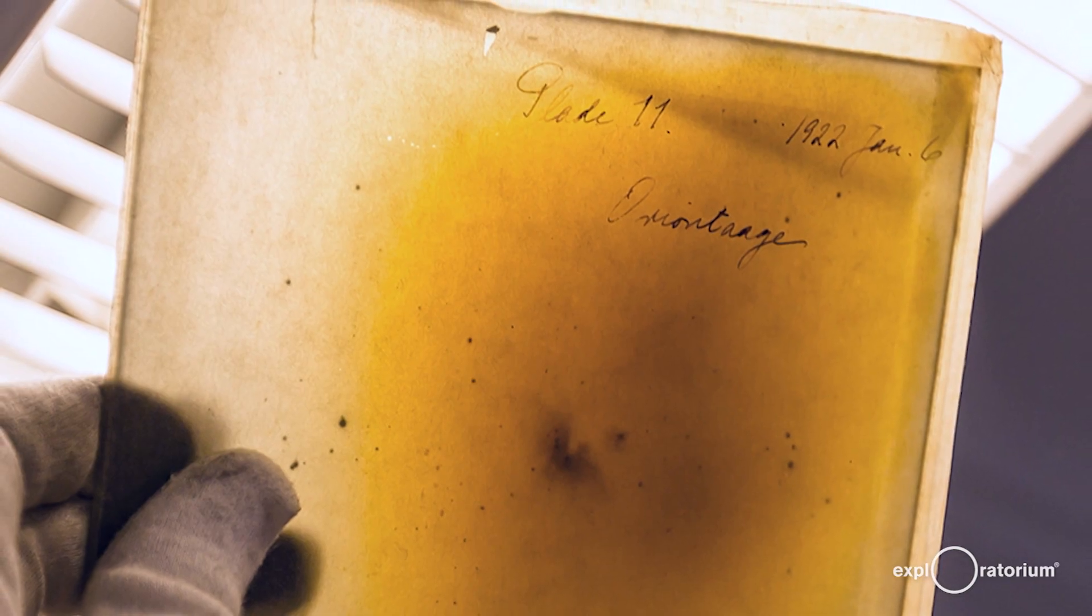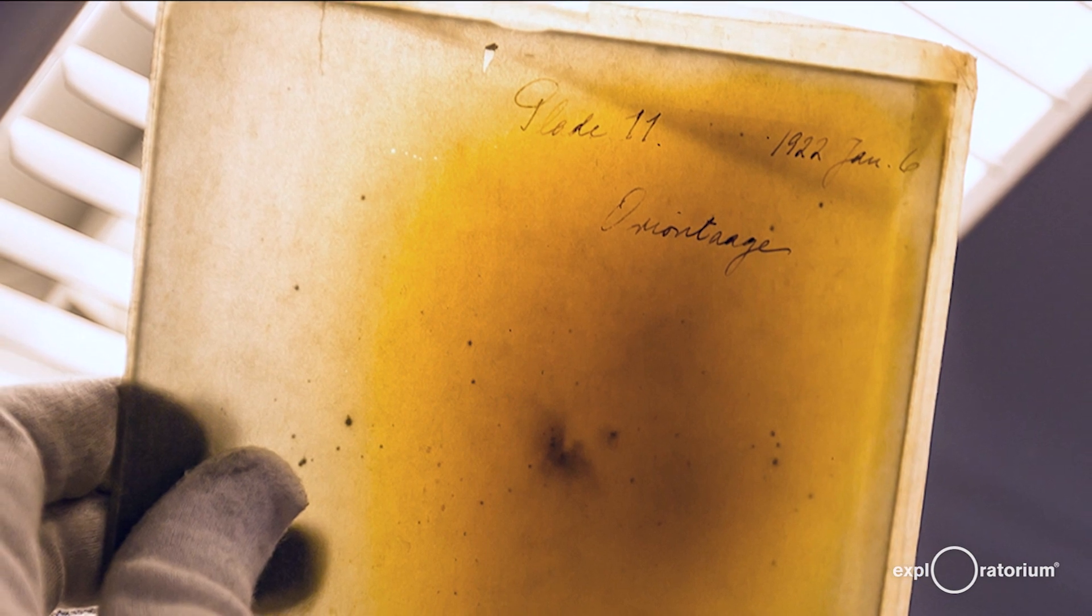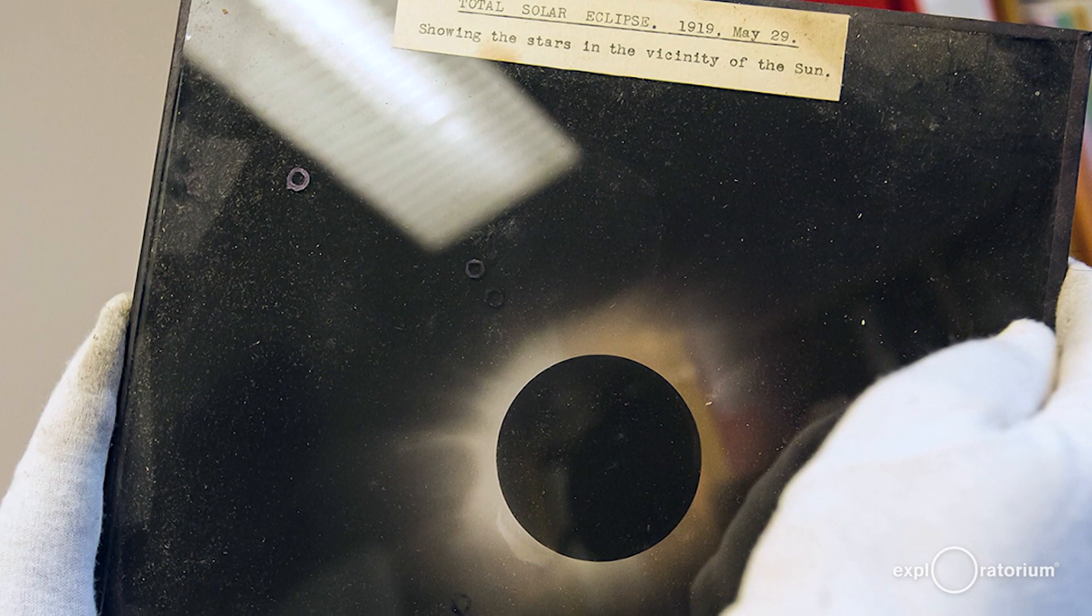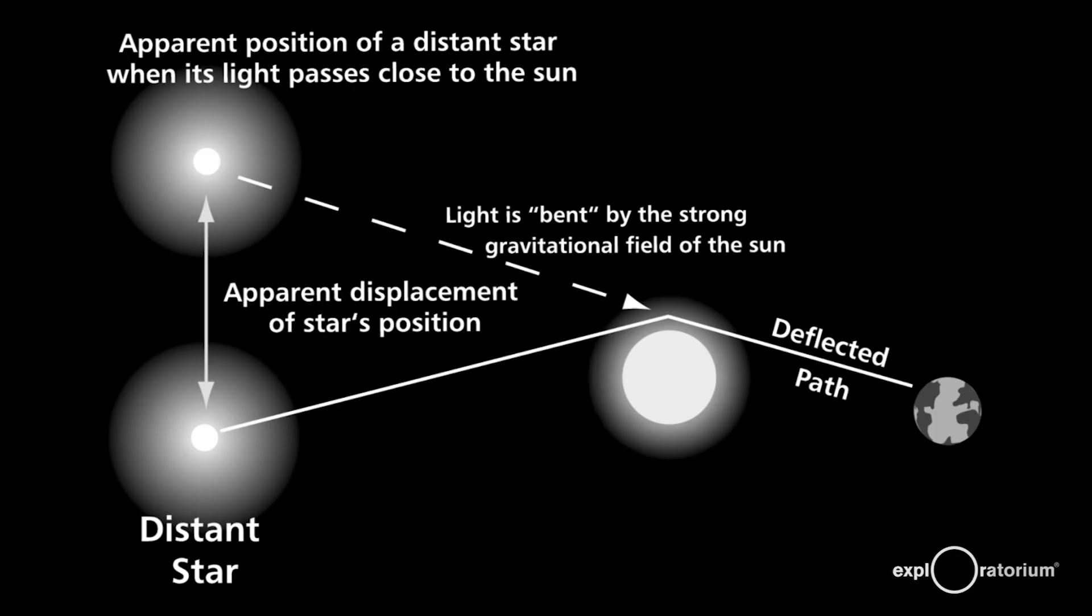He also photographed them six months before the total solar eclipse when the Sun was nowhere near those stars. He then compared the images and discovered that just as Einstein had predicted, starlight bent in the gravity of the Sun, but he needed a total solar eclipse to do that experiment.